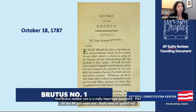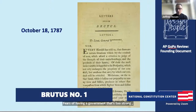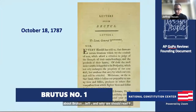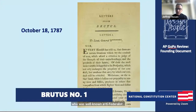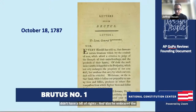Brutus was a pseudonym of an anti-federalist from New York who opposed the Constitution — probably a state judge and member of the New York ratifying convention named Robert Yates. He objected because it didn't have a bill of rights, and he embraced the classical view from the Romans and Aristotle that republics could only exist in small societies. Montesquieu embraced that classical view and Brutus quotes him at length. Montesquieu said, 'It's natural in a republic to have a small territory — otherwise it can't long subsist.'